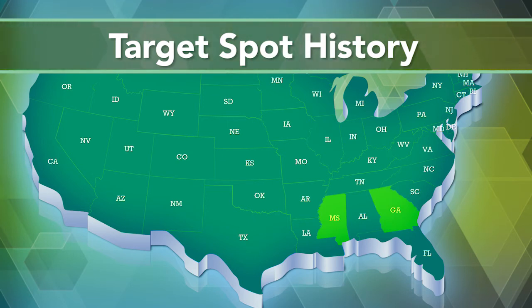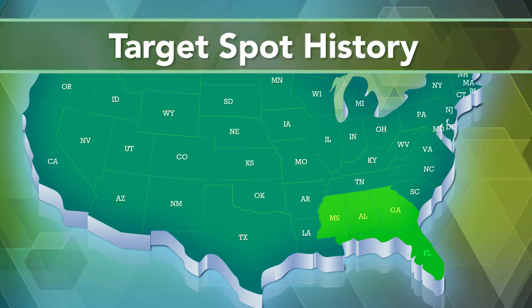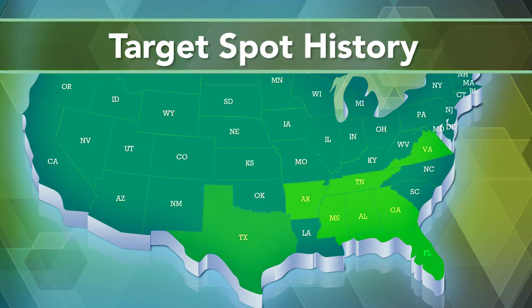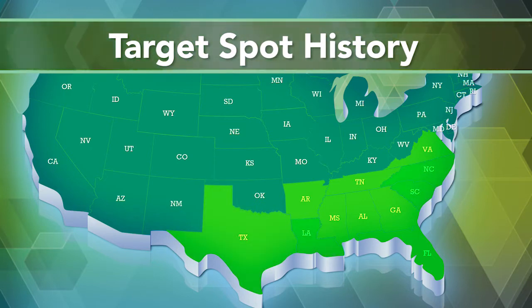Very rapidly after that it was identified in Florida and then in Alabama. Since then it has been identified in Virginia, Tennessee, Arkansas, and into Texas last year. So we know that wherever cotton is produced in the United States, with the exception of possibly Arizona or California, target spot is present.